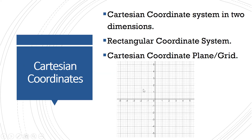This two-dimensional system where we can graph points is the Cartesian coordinate system in two dimensions. If you had a third dimension, you'd add a third axis. The Cartesian coordinate system is often called the rectangular coordinate system because the grid created is made of squares that can form rectangles. Other terminology includes the Cartesian coordinate plane, Cartesian coordinate grid, rectangular grid, or rectangular plane — all referring to the Cartesian coordinate system in two dimensions.